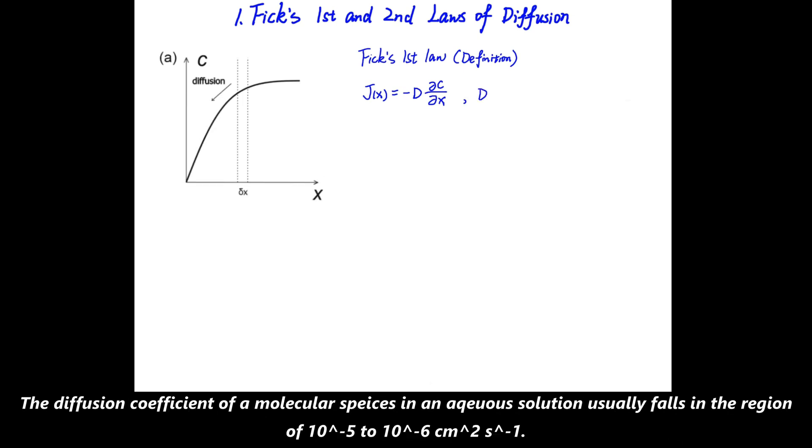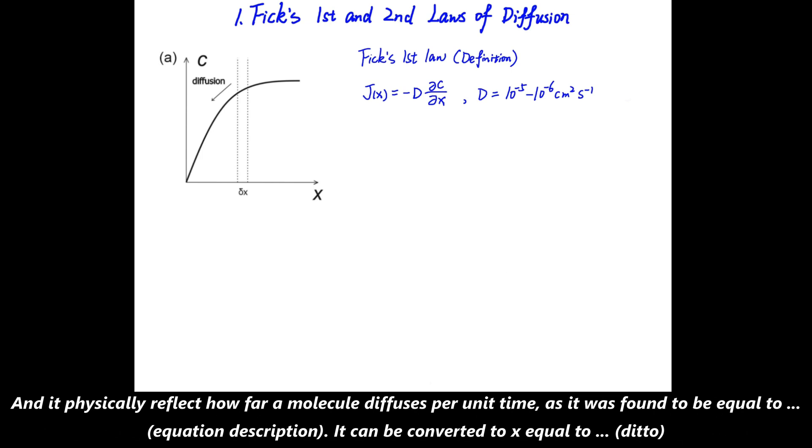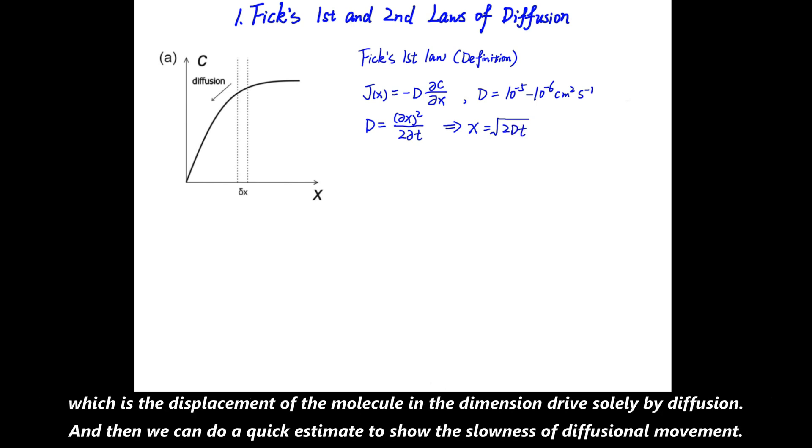The diffusion coefficient of a molecular species in an aqueous solution always falls in the region of 10^-5 to 10^-6 cm²/s, and physically reflects how far a molecule diffuses per unit time, as it was found to be equal to Δx²/2Δt. It can be converted to x = √(2DΔt), which is the displacement of the molecule in the dimension driven solely by diffusion.